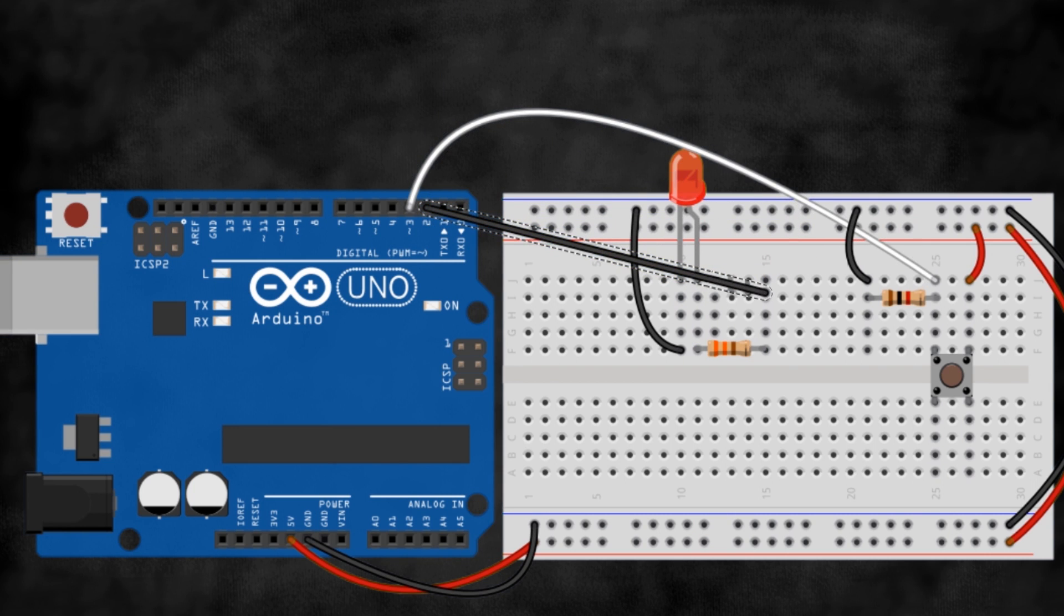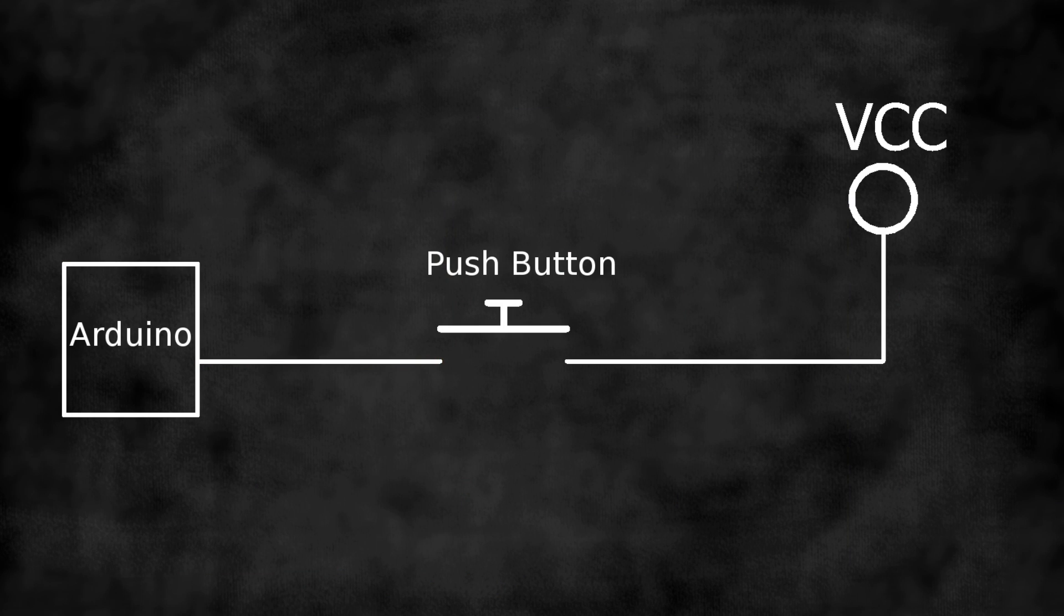Let me explain what is a pull-down resistor with a simple animation. You can see that when you press the button, electricity flows from the Arduino pin to the VCC, making it aware that the button is pressed. But, when you release it, the pin is in the air, which means the Arduino will read an inconsistent state, leading to wrong values.